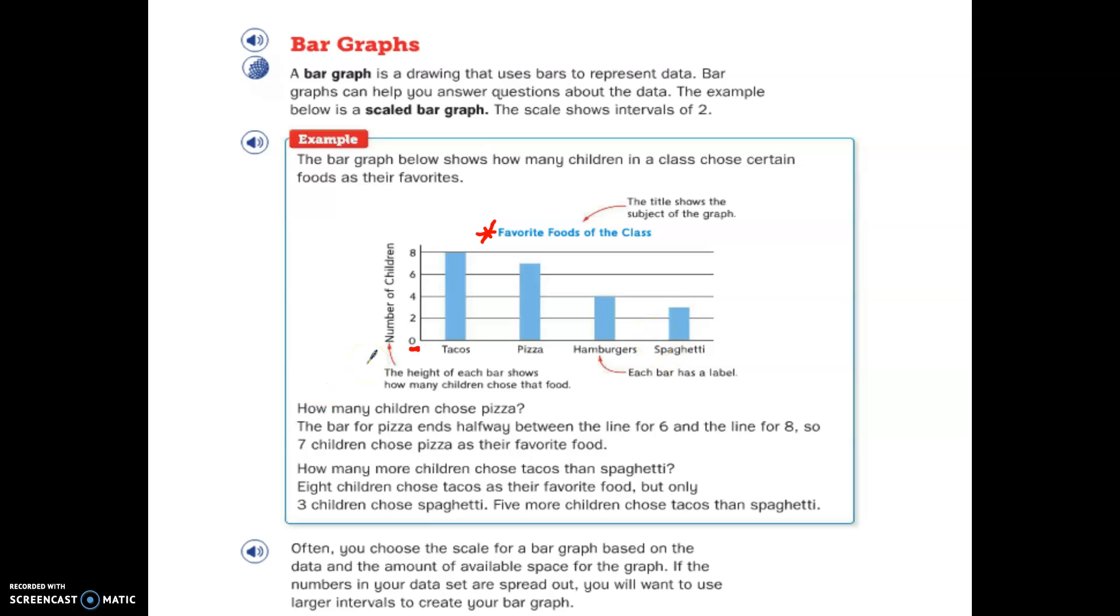We can use the data in the bar graph to help us answer these questions. How many children chose pizza? So when I go up here to pizza, it doesn't end at 6, and it doesn't go all the way to 8. It's in the middle. So I go back over to my scale, and I think 6 to 8. What's right in the middle of 6 and 8? It would be 7. So 7 children chose pizza.